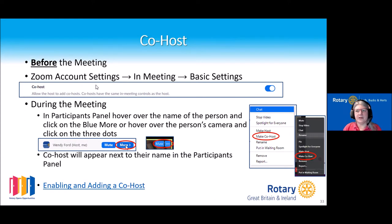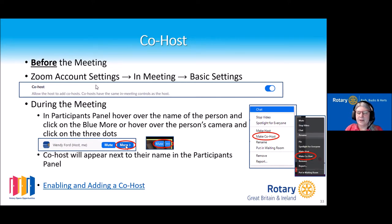Setting a co-host — having a co-host to help you run particularly larger meetings is a very good idea. This is something you must have the option enabled for before you start the meeting, by going into the Zoom web portal and selecting the option to allow co-hosts. Once in the meeting, go to the participants panel or the person's camera and use the shortcut menu to make that person a co-host. The co-host will generally have the same abilities as a host.